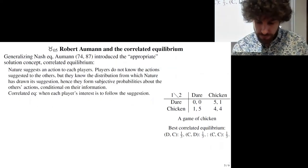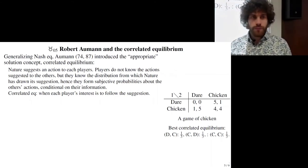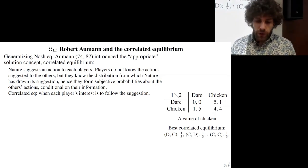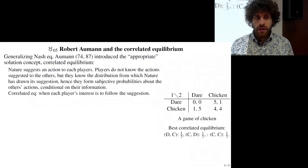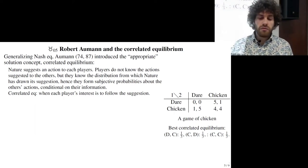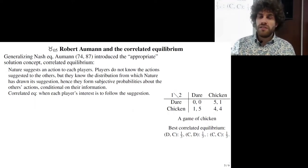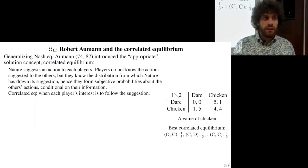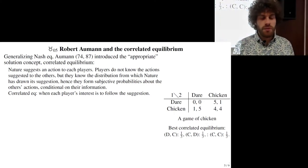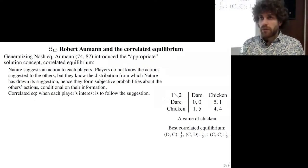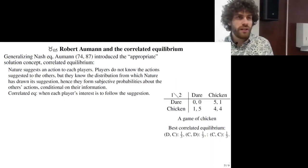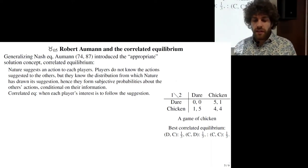It works as follows: you have a third party — trusted by both players, which we can call 'nature' — that suggests an action to each player. Players do not know the action suggested to the others, but they know from which distribution of strategies nature has drawn the suggestion. So they have subjective probabilities about what the others will do given this information. There is a correlated equilibrium when it is in the players' best interest to follow the suggestion.